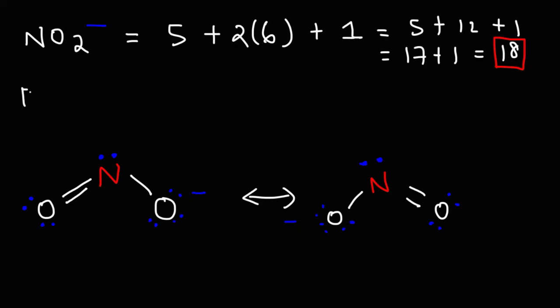The molecular geometry around the central nitrogen atom is bent, and the hybridization at the nitrogen atom is sp2, just in case you needed that information.